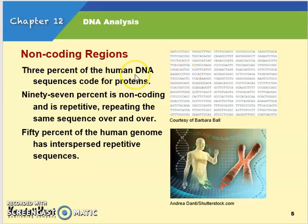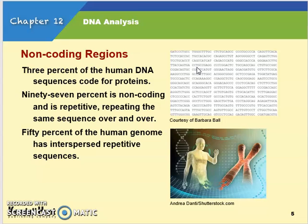Three percent of the human DNA sequences code for proteins. Ninety-seven percent is non-coding — it's repetitive, the same sequences over and over again. It's what we refer to as junk DNA. Fifty percent of the human genome has interspersed repetitive sequences. The parts we're looking at in forensics are going to be those coding sections.